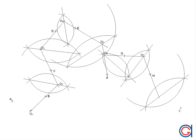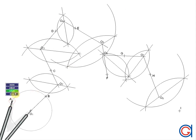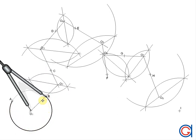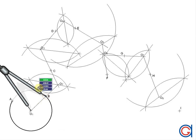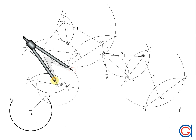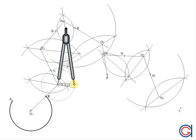Now that we have all the center points, we draw the arcs. Setting the compass on the given center point O1 with radius O1A, we join points A and B in a thicker line — on the external side. We then set the compass on O2 and join B to C in the opposite direction, so as to avoid creating any angles, always alternating direction.